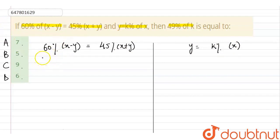Now, let's simplify the left-hand side. So, 60 by 100 into x minus y is equals to 45 by 100 into x plus y.